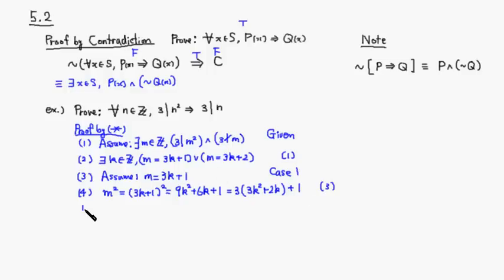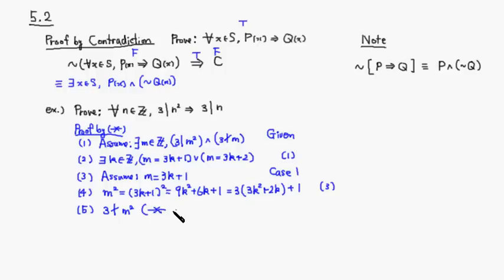This implies that 3 does not divide m squared because of the remainder of 1. But this is a contradiction — it contradicts line 1, which assumed 3 divides m squared. So we're done with the first case.